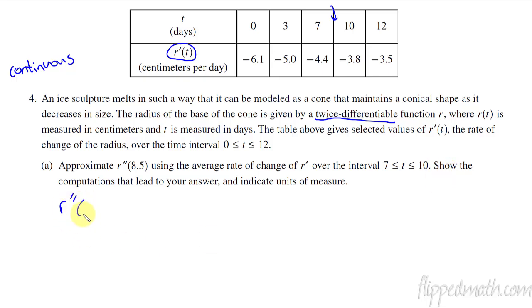So my second derivative evaluated at 8.5 is approximately the average rate of change here. Remember it's the change in y. So the y's have to go on top, and the x change goes on bottom of the fraction. So negative 3.8 minus negative 4.4, and that is all over the 10 minus 7.